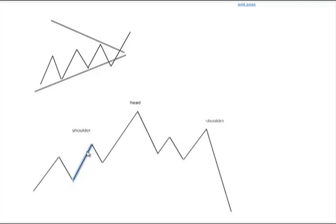As the market dips during the uptrend, a new high is created as the market breaks out to the upside, but it is again met by resistance at the higher high which forms the head of the pattern. Once again, when the market dips, it is repurchased at support levels which starts to form the beginning of a consolidation.